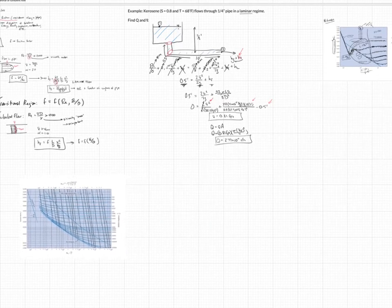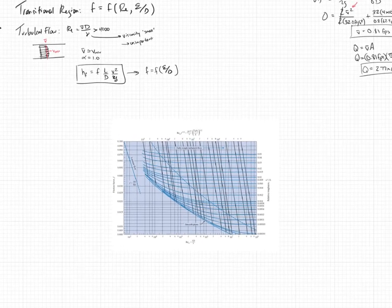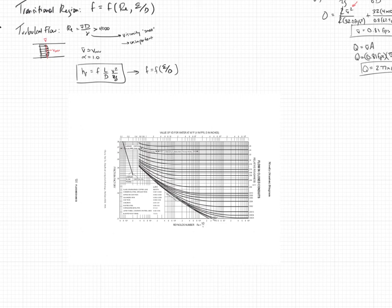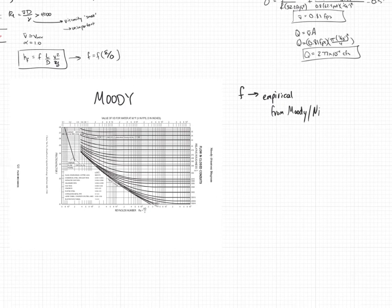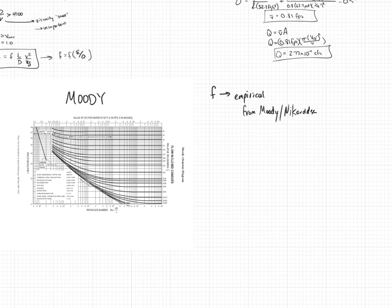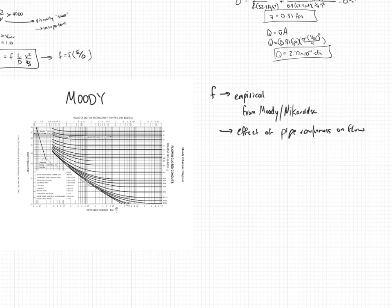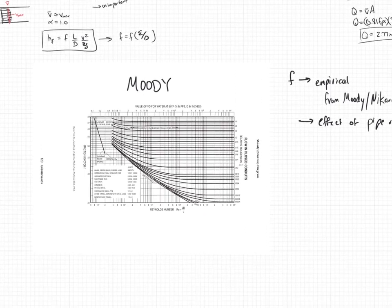Now let's talk specifically about the friction factor — this is heady stuff, and it's about to get even headier. I'm going to change to the Moody diagram, because that's what I recommend. What I've just zoomed in on is the Moody diagram. This is where you're going to get your friction factor. Your friction factor is empirical, meaning it's determined entirely by experiments, and you basically get it off this diagram from Moody and Nikuradse. It represents the effect of pipe roughness on flow.